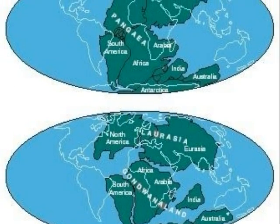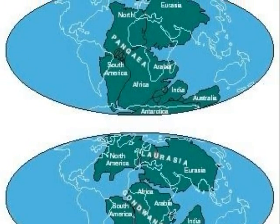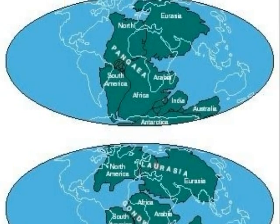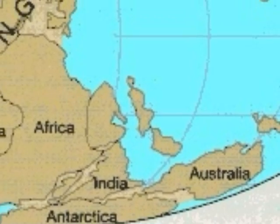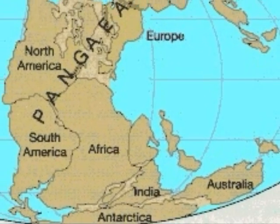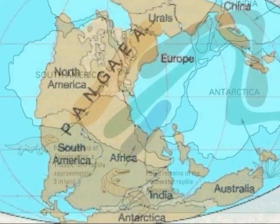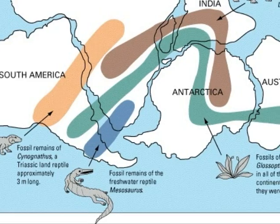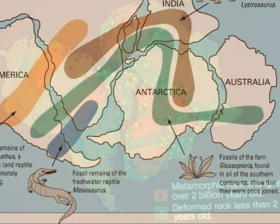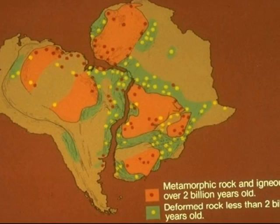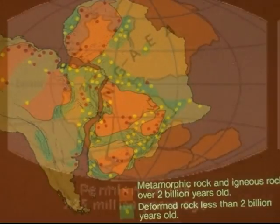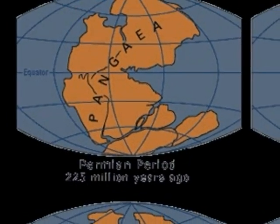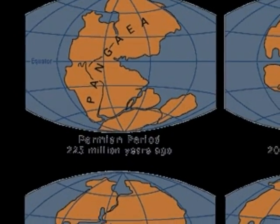Drift — here it fits like puzzle pieces. Continents match up to make Pangea. Fossils, rocks, and puzzle pieces are evidence used for Wegener's truth.